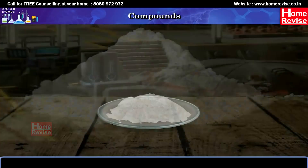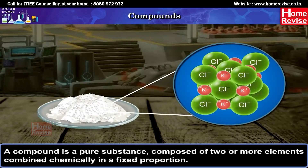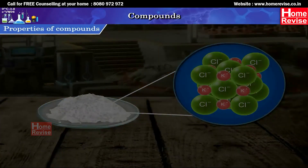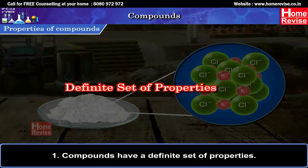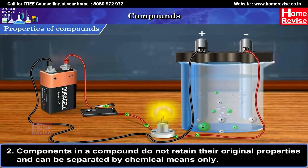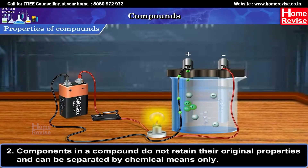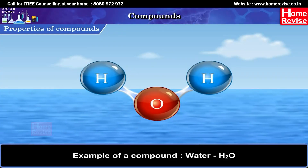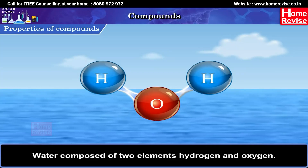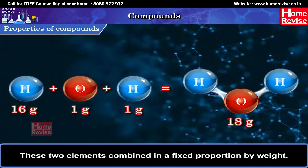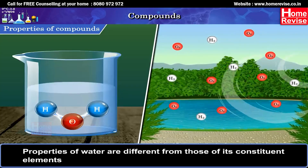Compounds: A compound is a pure substance composed of two or more elements combined chemically in a fixed proportion. Particles in a compound are of one kind only. Properties of compounds: 1. Compounds have a definite set of properties. 2. Components in a compound do not retain their original properties and can be separated by chemical means only. Example: Water (H2O) is composed of two elements, hydrogen and oxygen, combined in a fixed proportion by weight. Properties of water are different from those of its constituent elements.